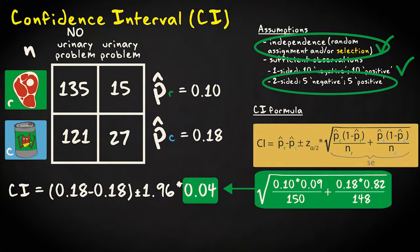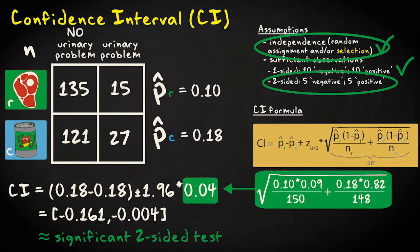The confidence interval for our example data is 0.10 minus 0.18 plus and minus 1.96 times the standard error, which equals 0.04. This results in a confidence interval that ranges from minus 0.161 to minus 0.004. This corresponds to a significant two-sided test since the value 0, no difference in the proportions, lies outside the interval, which means it's an implausible value. The interval does lie very close to 0 though.